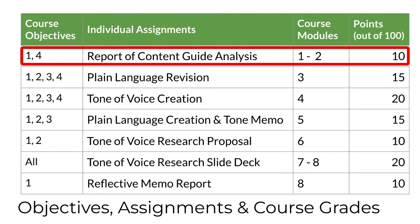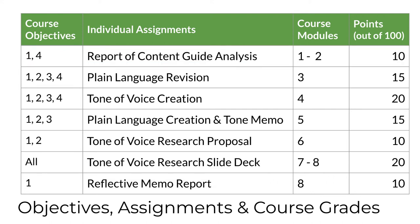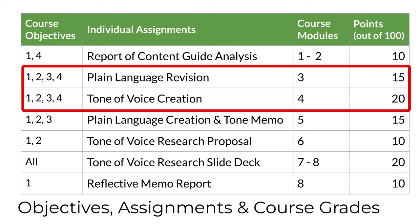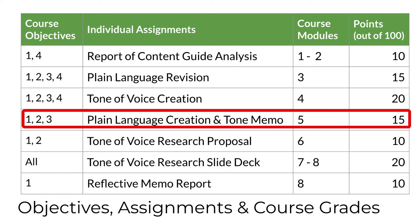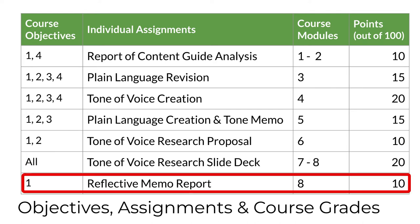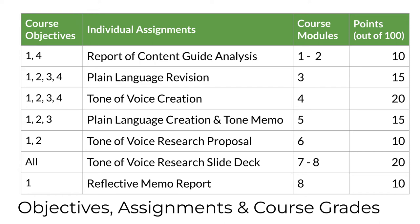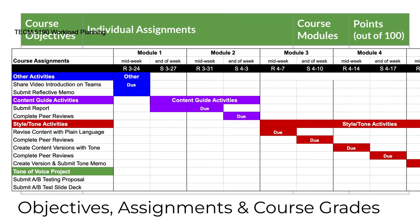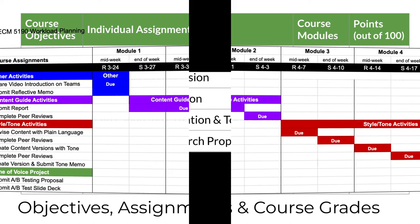You'll analyze two tone of voice content guides from industry in a report and review the work of your classmates. Then you do a series of revision and analysis activities with tech content, concentrating first on plain language and then on alternative tones of voice. Most of that work will involve reviewing the work of classmates. You'll also analyze tone of voice in plain language and write a short report. You'll finish the course by completing a tone of voice research project, which will involve a proposal and then finally a slide deck report. At the end of the course, I'll also evaluate your reflection on what you've learned. Details about every assignment are found on Canvas, including how I will evaluate your performance. I hope you find the Gantt chart that I provided on Canvas useful for showing your workload for each week or module in the eight-week course.